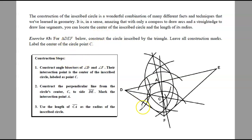The construction steps. Well, first off, the problem. For a triangle DEF, construct the circle inscribed by the triangle. Leave all the construction marks and label the center point C. So we're starting with just a triangle. Again, a completed construction here, so I'm going to walk you through the steps. Step number one was to construct angle bisectors of angles D and F. So at this point, it makes sense for you to pause your video and bisect angles D and F.